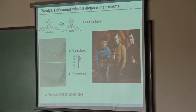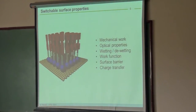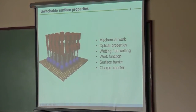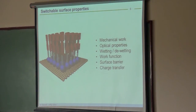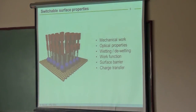The idea is that by bringing a switch to a surface, you can change or switch surface properties. Like mechanical work — people have used switches to lift droplets of mercury — you can change optical properties, wetting and de-wetting of the surface, the work function, the surface barrier related to this work function, and then the charge transfer across this surface barrier.